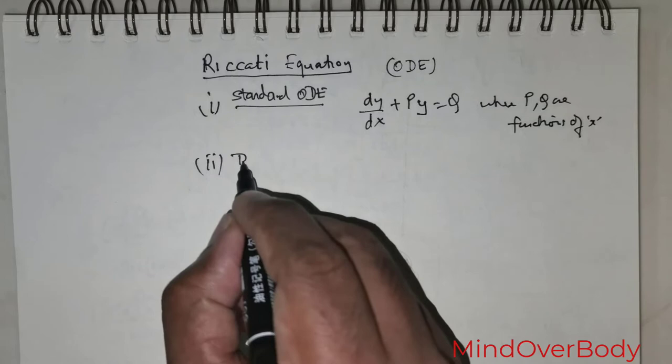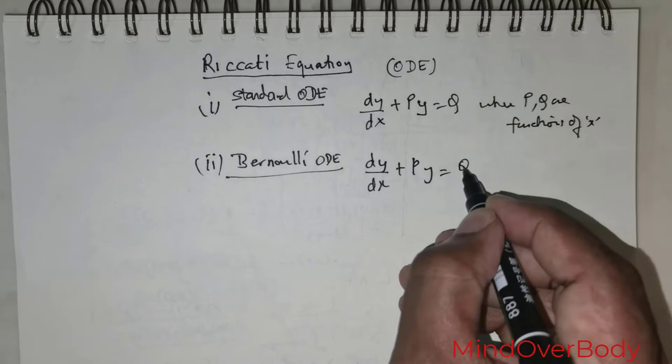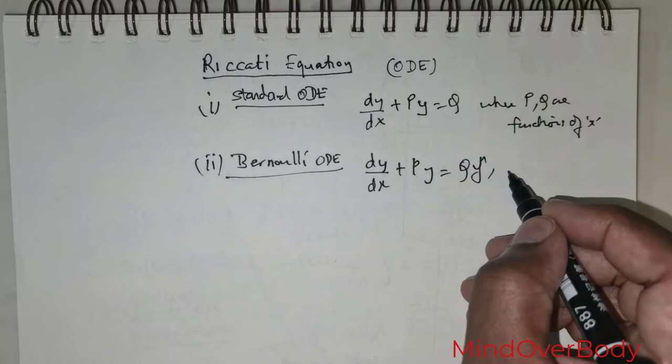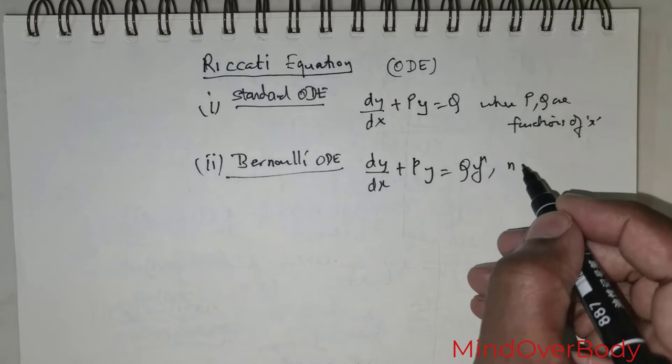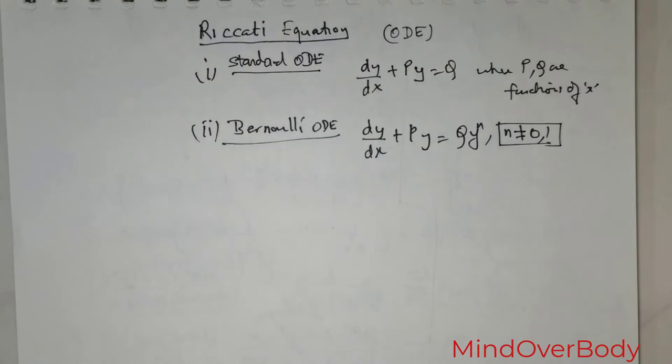We also got exposed to what is called Bernoulli's ODE. The form of this Bernoulli ODE was dy/dx + p times y = q times y raised to the power of n. The values of n are higher than 1 — in other words, n cannot take the value 0 or 1. So this is Bernoulli's.